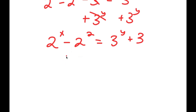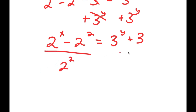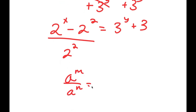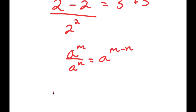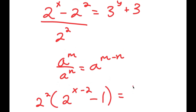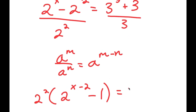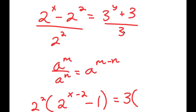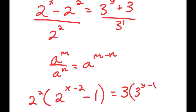On the left side I'm going to divide by 2 squared. Using the quotient of powers rule — a to the power of m over a to the power of n equals a to the power of m minus n — I get 2 to the power of x minus 2, and then negative 2 squared divided by 2 squared gives negative 1. On the right side I divide by 3: since 3 equals 3 to the power of 1, I get 3 to the power of y minus 1, and 3 divided by 3 gives plus 1.